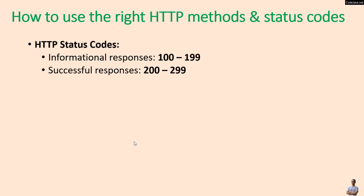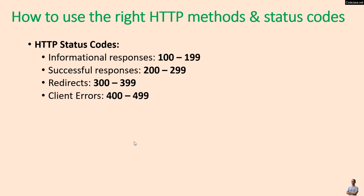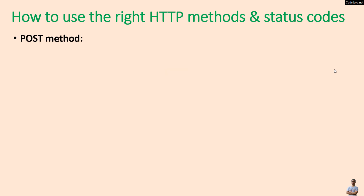HTTP status codes are divided into some categories: informational responses with codes ranging from 100 to 199, successful responses with codes ranging from 200 to 299, redirects with codes ranging from 300 to 399, and client errors ranging from 400 to 499.